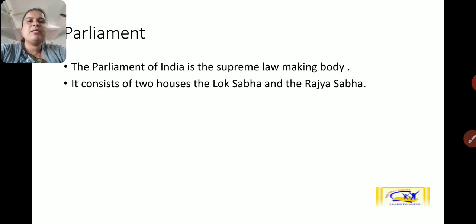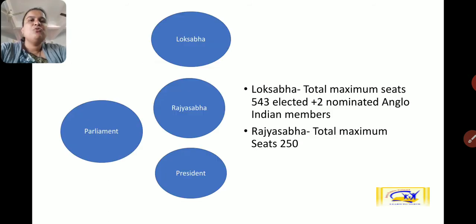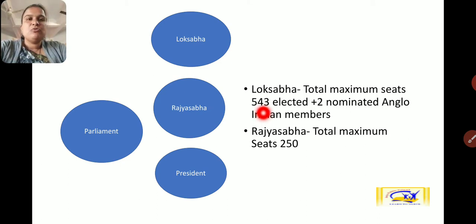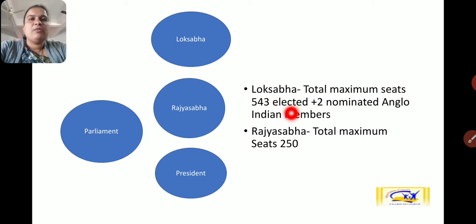Parliament is the supreme law-making body and consists of two houses: Lok Sabha and Rajya Sabha. The parliament includes Lok Sabha, Rajya Sabha, and the President. Lok Sabha has 543 elected members, one from each parliamentary constituency, elected by the people — those members are called MPs — plus two nominated Anglo-Indian members appointed by the President.